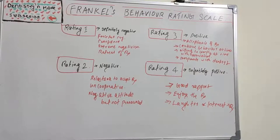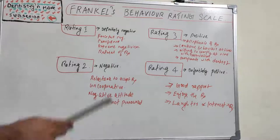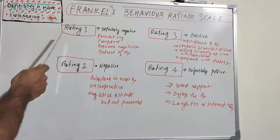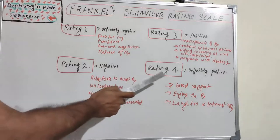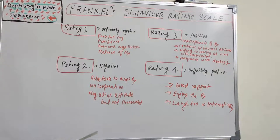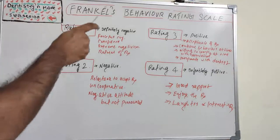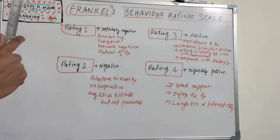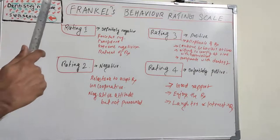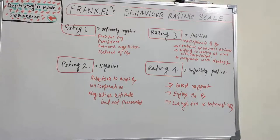So what is Frankl's Behavior Rating Scale? He has given rating one, two, three, and four. Rating one is very negative, a very stubborn character, and rating four is very cooperative — the kid is enjoying the treatment. This classification is with respect to the kid's behavior inside a dental clinic or with a doctor.